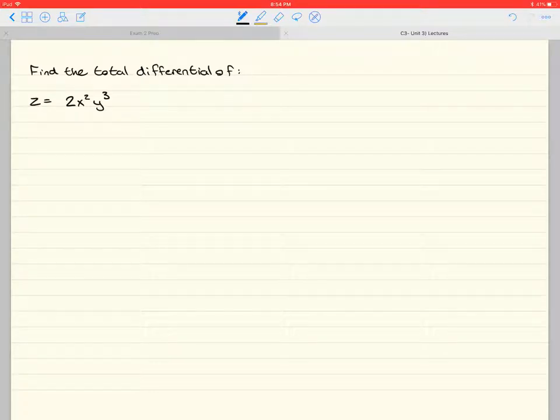So here we can actually plug this into a fancy equation that I'm going to delve into in a little bit. So dz is equal to del z over del x dx plus del z over del y dy.